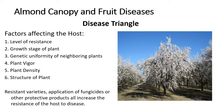Let us cover the three sides of the triangle in more detail. First, let us focus on the host, which is the almond tree. Each cultivar of almonds has a different level of innate resistance, meaning some varieties are more susceptible to diseases than others. For example, Butte is more susceptible to brown rot than Nonpareil. The growth stage of the plant is also important, as diseases may only affect a certain stage. Blossom diseases can only occur when flowers are on the tree, just as foliar diseases can only infect leaves when they're on the tree. Having high genetic uniformity within the orchard will lead to either an increase or decrease in disease depending on whether that genetic line is less or more resistant.